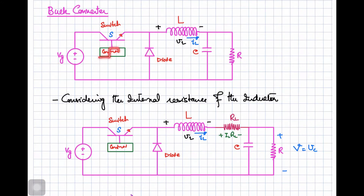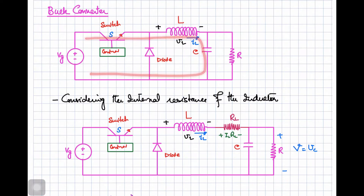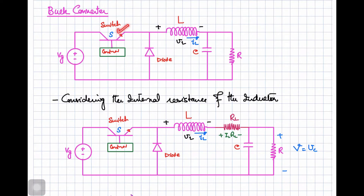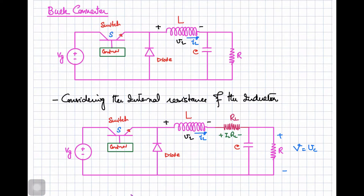Whenever we apply the gate voltage to the switch, it will be turned on. Once the switch is turned on, the current will flow through the inductor and capacitor back to the source, or through the inductor and the load back to the source. When the switch is turned on, the diode will be in the off state, because assuming an ideal switch modeled as a short circuit, there will be a positive voltage at the cathode.